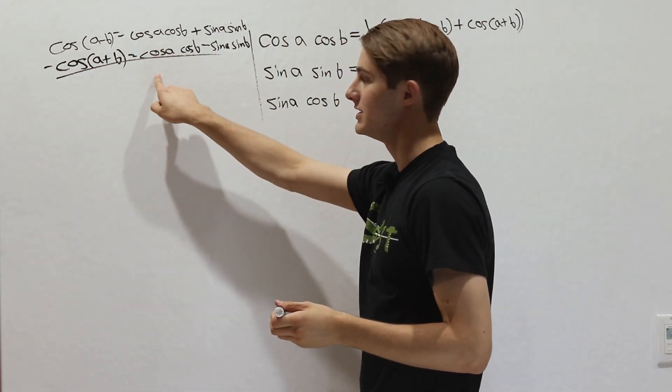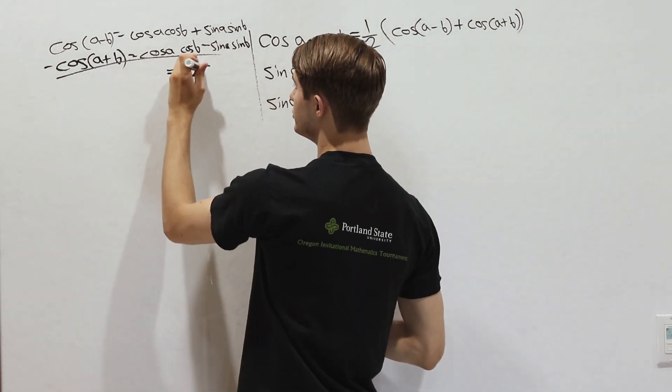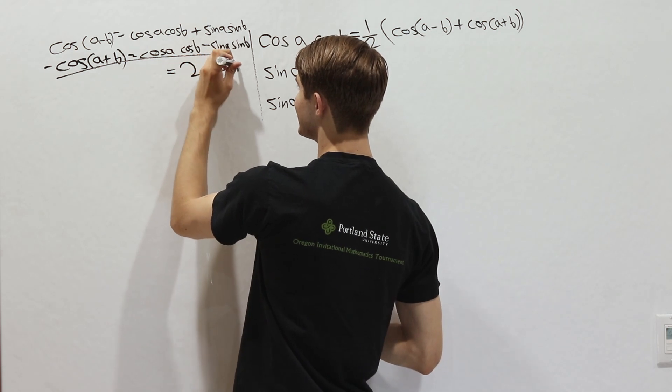So now the cosine a cosine b is going to cancel right here, and we're going to end up with, on this side of the equation, 2 sine a sine b.